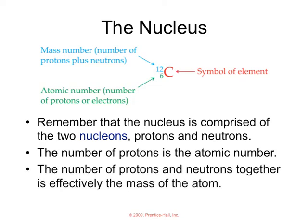If you remember, the nucleus is composed of two nucleons - the protons and the neutrons. The number of protons is the atomic number, the smaller number down here, and the number of protons and neutrons together is effectively the mass of the atom and also the mass number.